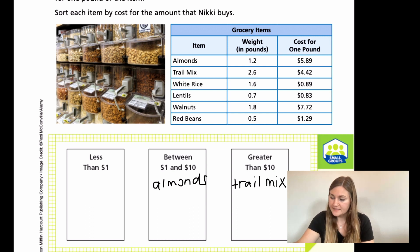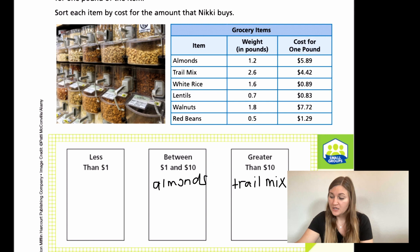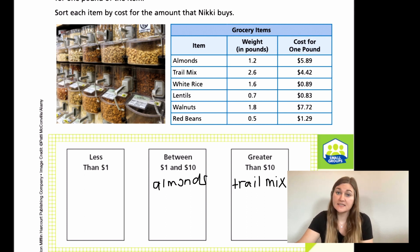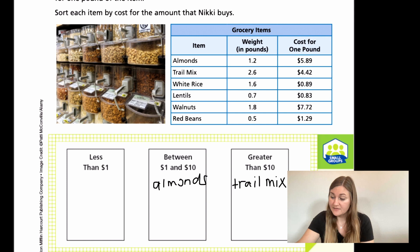For the white rice, we have 1.6 pounds, so we do one whole of the total cost and then half of that cost on top. We only have $0.89, so $0.89 plus another $0.40 is going to be about $1.20. It's definitely going to be more than $1, so we put white rice in the middle section between $1 and $10.